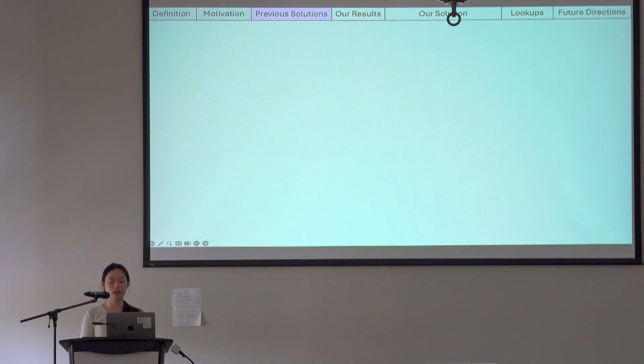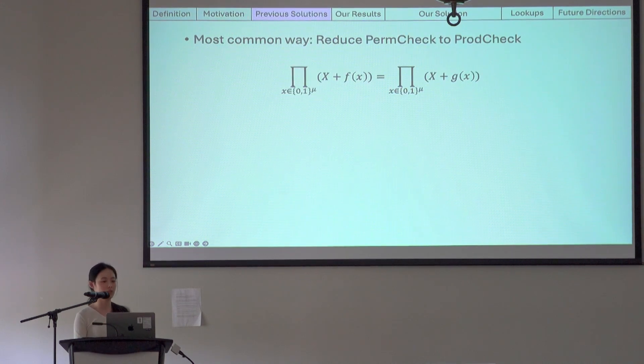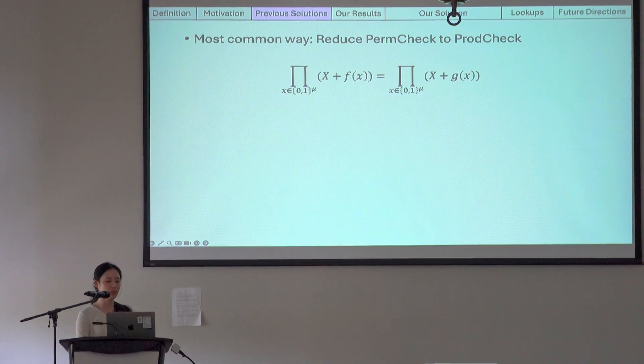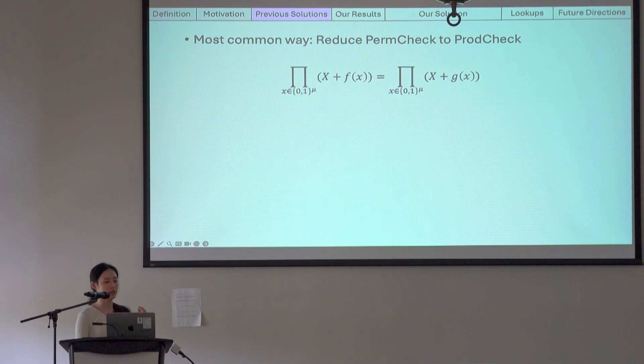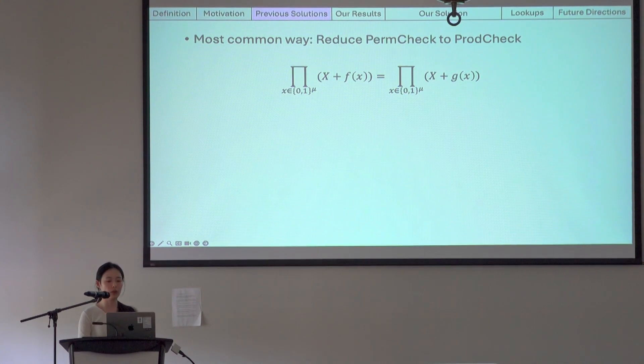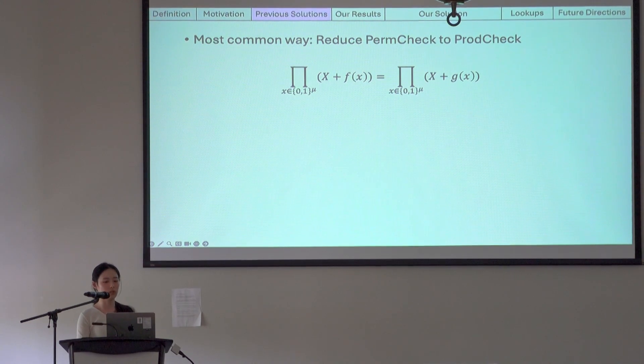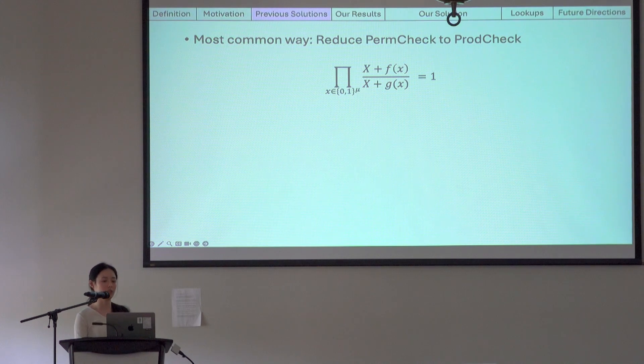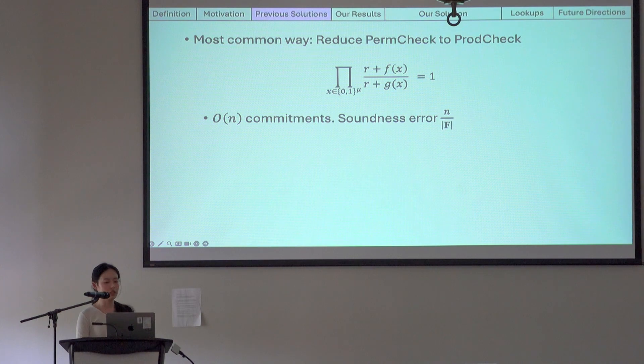So how was a permutation check previously done? Well, the most common way is to reduce it to a univariate product check. We'll prove that the product of f of x plus a random value is equal to the product of g of x plus a random value over the Boolean hypercube. This is equivalent to saying that the product of these fractions is equal to one. When the product check is instantiated, the variable is replaced by some random challenge r. The product check requires linear commitments and has a soundness error of n over the field size.